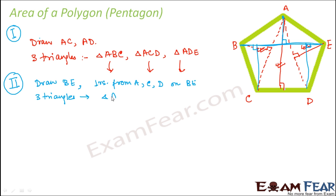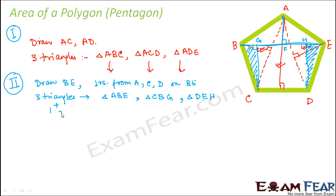So the three triangles are: triangle ABE (the top triangle), triangle CBG, and triangle DEH — where G, H, and F are the feet of the perpendiculars. Plus we have one rectangle CDHG. So the area of the pentagon is the sum of the areas of these three triangles plus the rectangle. Now, it is not always necessary that this middle region will be a rectangle — it depends on the shape of the pentagon.